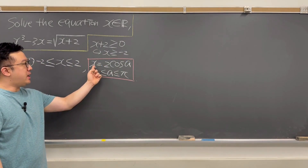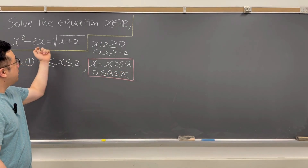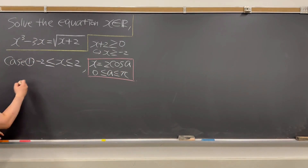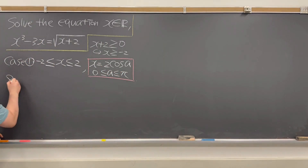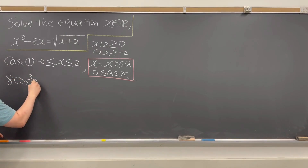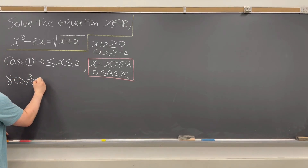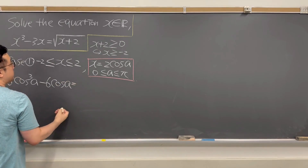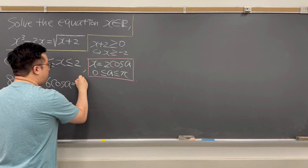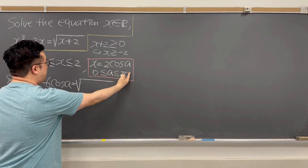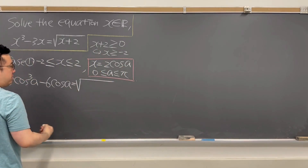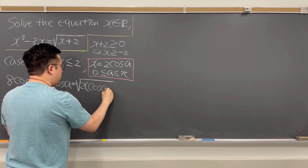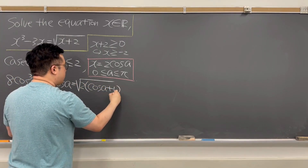Let's plug x equals 2 cosine A into our original equation. So now we have 8 times cosine cubed of angle A minus 6 cosine A, and that is equal to the square root of 2 times cosine A plus 2. Let me factor this 2 out — in parentheses we have cosine A plus 1.